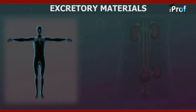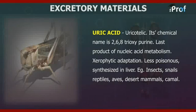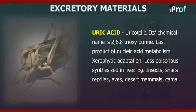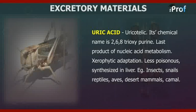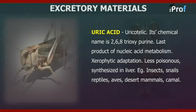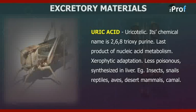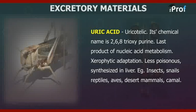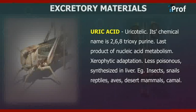Another excretory material is uric acid. Those animals that eliminate uric acid are called uricotelic animals. Its chemical name is 2,6,8-trioxypurine. It is the last product of nucleic acid metabolism, and represents a xerophytic adaptation. Uric acid is less poisonous and is synthesized in the liver. For example, insects, snails, reptiles, aves, desert mammals, and camel are all examples of uricotelic animals.